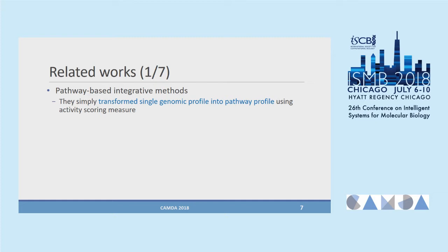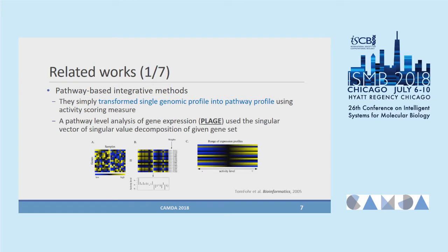I will introduce some recent works about pathway-based integration methods. These methods simply transform a single genomic profile into a pathway profile using activity scoring measures. One method published in Bioinformatics 2005, called pathway-level analysis of gene expression — PLAGE — uses the singular vector of singular value decomposition (SVD) as an activity scoring measure for a given gene set for each pathway, transforming the single genomic profile into pathway activities per sample.